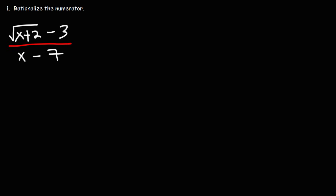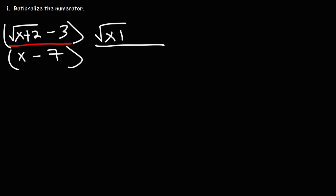Now let's work on another problem. It looks a little bit more complicated but the process is still the same. So let's multiply the top and the bottom of this fraction by the conjugate of the numerator. The conjugate is everything we see except we flip the sign that separates the two terms — since it's a negative sign we're going to change it to positive.